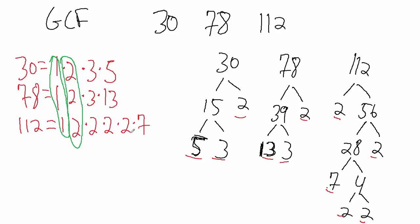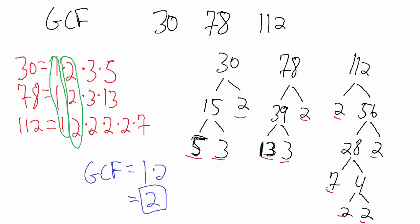And lastly, 112 has a factor of 7, but 30 and 78 do not. So the only factors that these three numbers have in common are 1 and 2. So our greatest common factor, or GCF, is 1 times 2, which is just 2. The greatest common factor of these three numbers is 2.